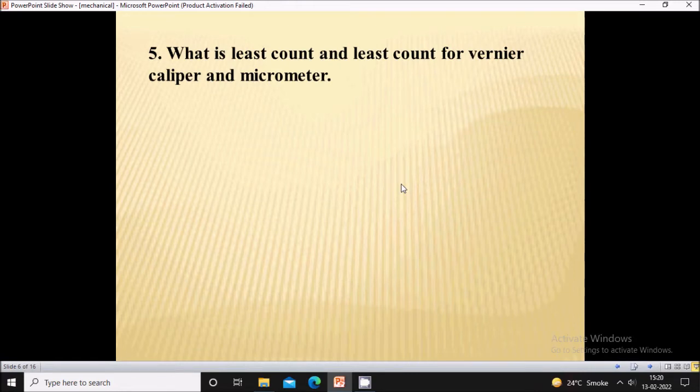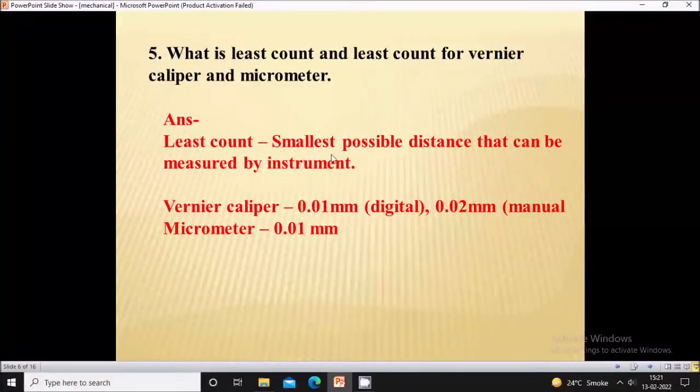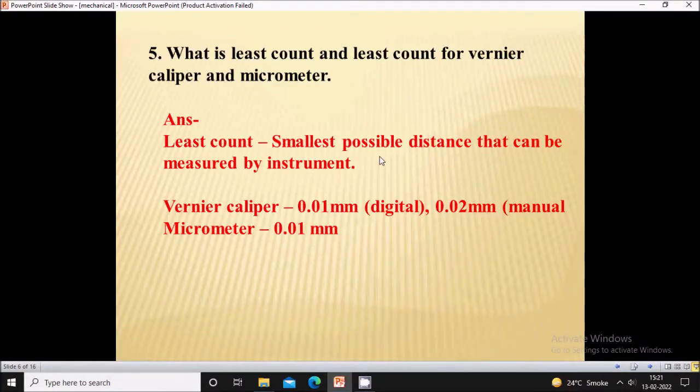Fifth, what is the least count and least count for vernier caliper and micrometer? Least count is the smallest possible distance that can be measured by an instrument. For vernier caliper, if it is digital the least count is 0.01 mm and for manual it is 0.02 mm. For micrometer, the least count is 0.01 mm.